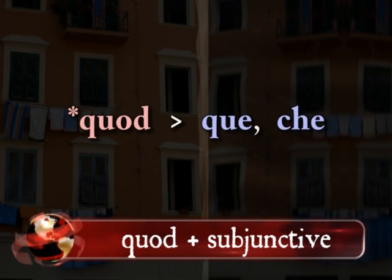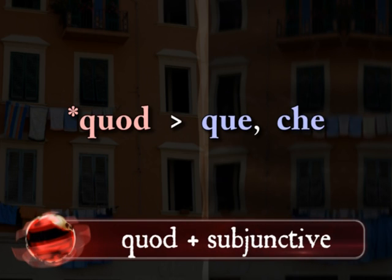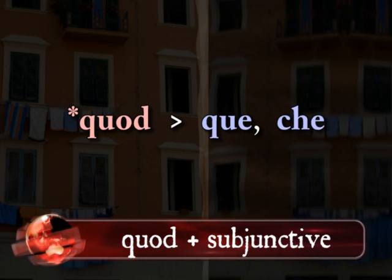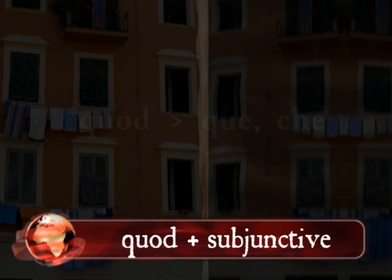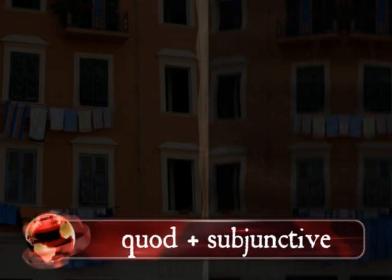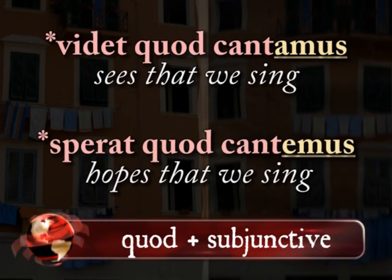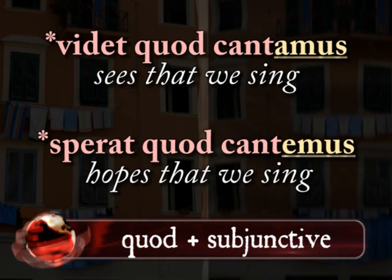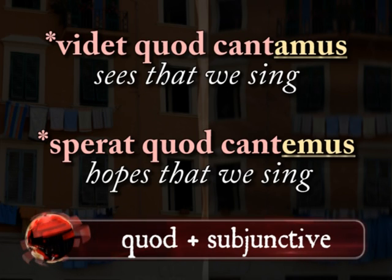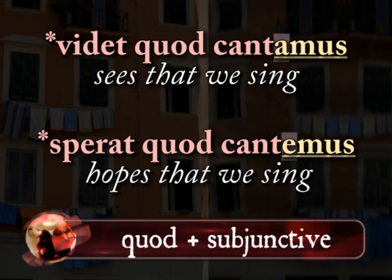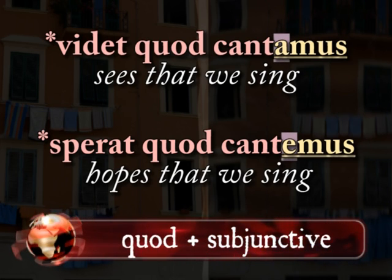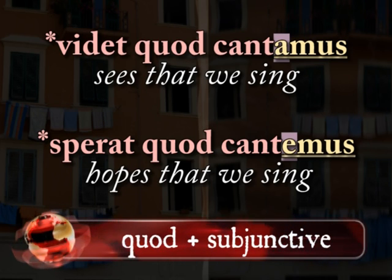I slid a little word quod in there — it's the word for 'that' in Latin, and it becomes something like che in nearly every Romance language. We use che to connect the subjunctive verb to the verb that triggers the subjunctive, as in 'hope that', 'want that', 'need that', 'recommend that', and so on. So videt quod is followed by an indicative: videt quod cantamus, but sperat quod by a subjunctive: sperat quod cantemus. Notice the thematic vowel — it switches. This is a key feature that distinguishes indicatives and subjunctives.